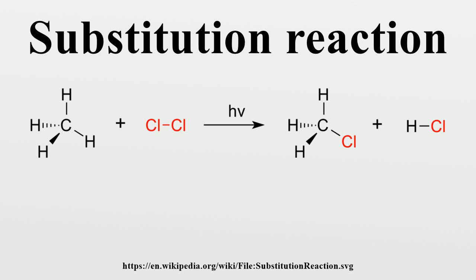These substitutions can proceed by two mechanisms: unimolecular nucleophilic substitution (SN1) and bimolecular nucleophilic substitution (SN2). The SN1 mechanism has two steps. In the first step, the leaving group departs, forming a carbocation C⁺. In the second step, the nucleophilic reagent attaches to the carbocation and forms a covalent sigma bond. If the substrate has a chiral carbon, this mechanism can result in either inversion or retention of configuration — usually both occur without preference, resulting in racemization.